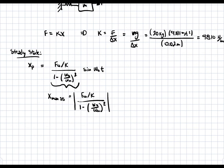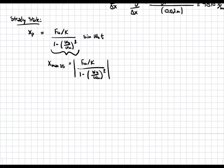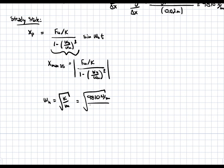So first we can find the natural frequency. The natural frequency always just depends on the mass and the spring constant — it doesn't depend on the forcing frequency. So we know that ωn is equal to the square root of k over m, which is equal to the square root of 9810 newtons per meter divided by 20 kilograms, which is equal to 22.147 radians per second.